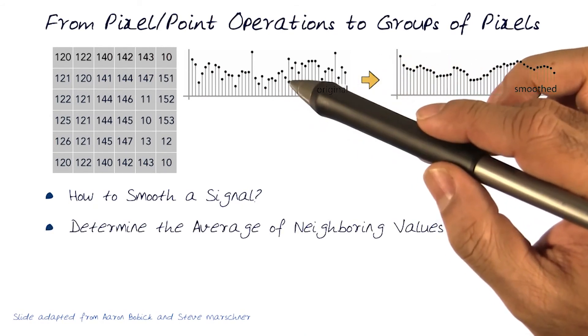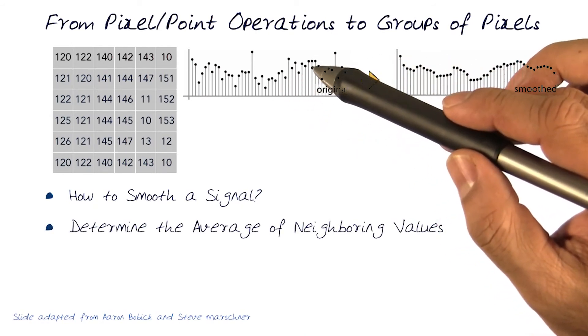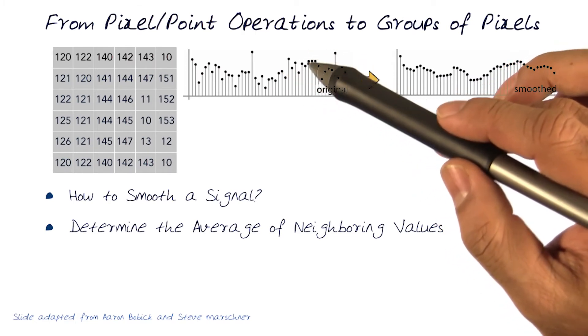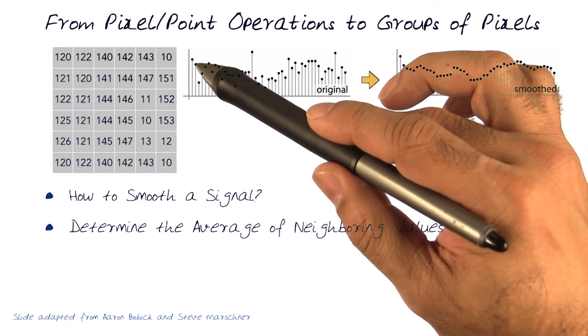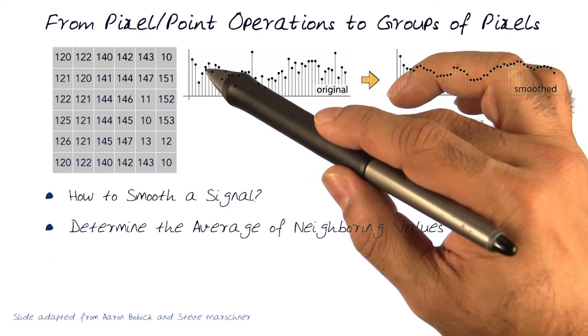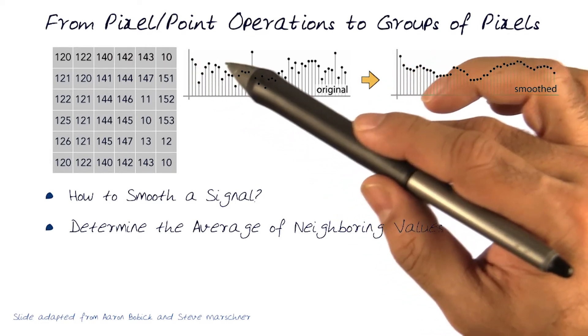One of the best ways of doing a simple smoothing of a signal could be that we can actually just take the average of the neighborhood values. So I could, for example, look at these four image values, or intensity values, and figure out the average of four or five of them, and replace it in the middle.